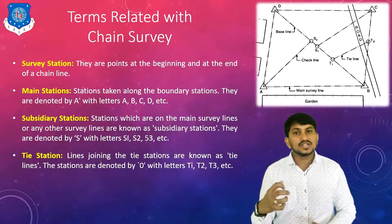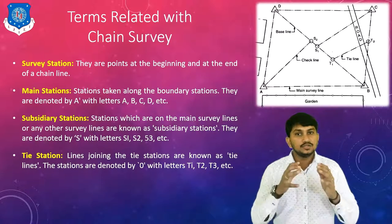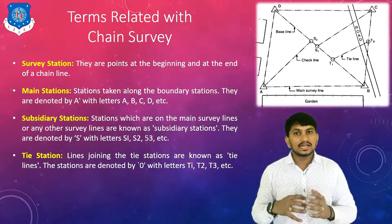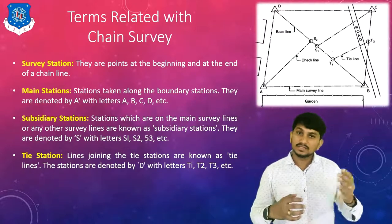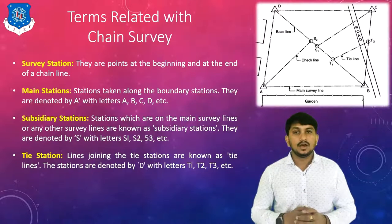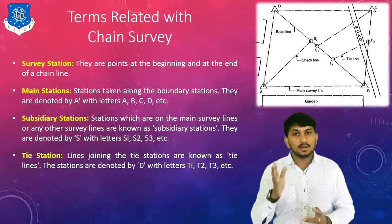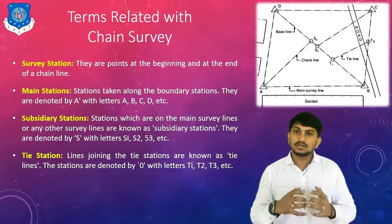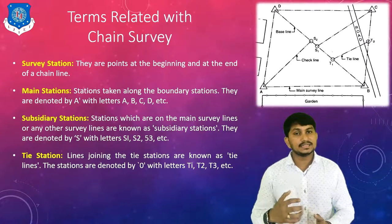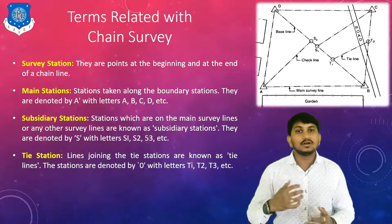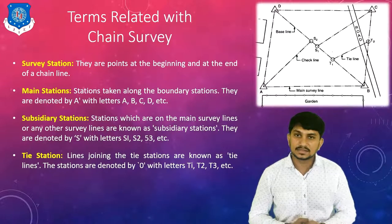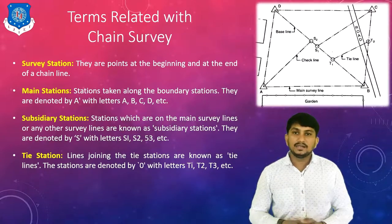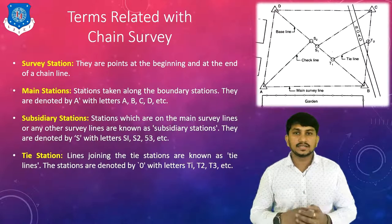The last terms are tie stations and tie line. They are usually used when there are chances of long offsets. Offset is the distance between the object and the chain line. Long offsets should be avoided in chain survey, and for that, tie lines or tie stations are used. The connecting points of tie lines are called tie stations, denoted by T1, T2, T3, etc.